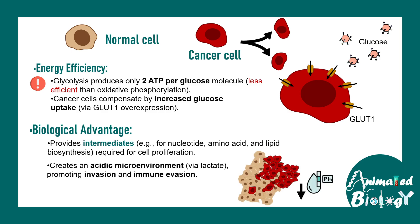The lactate that is produced after these glycolytic events actually drops down the pH of the environment, and that helps the tumor cells to evade the body's own immune system. So it is super beneficial for the cancer cells — not only in terms of getting intermediates, but also in terms of evading the immune system.